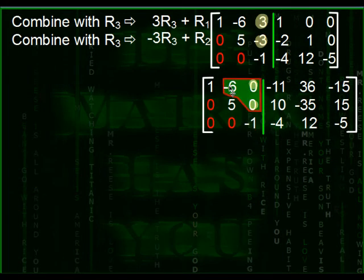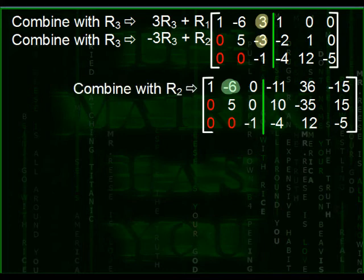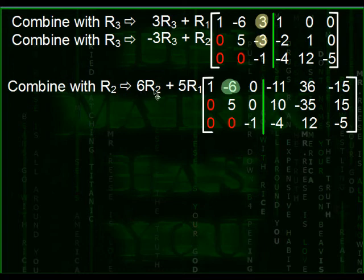We still need a 0 here. Therefore, to zero out this negative 6, you're going to combine this first row with row 2. It is only row 2 because if you tried to use row 3, consider you'd have to multiply 0 by something to get 6. So that way, when you combine with negative 6 to get 0. There is nothing you could multiply to 0 to make it into a 6. It just can't happen. That's why you're only left with row 2 as your option. That means 6 times row 2 and then combined with row 1 multiplied by 5.